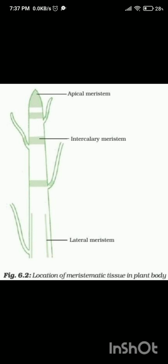As a real-life example, consider the regrowth of grass after being grazed by animals. The portion of grass that was cut starts growing back rapidly from the base, where the intercalary meristem is located. This allows the grass to quickly recover and continue its growth.